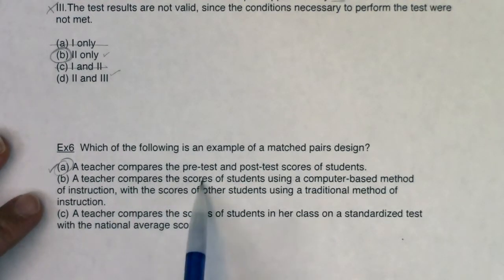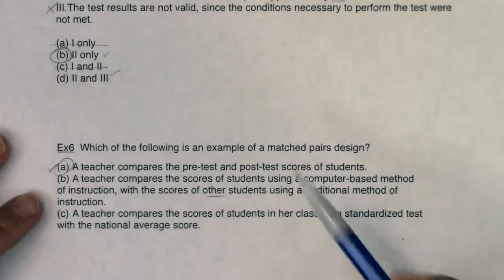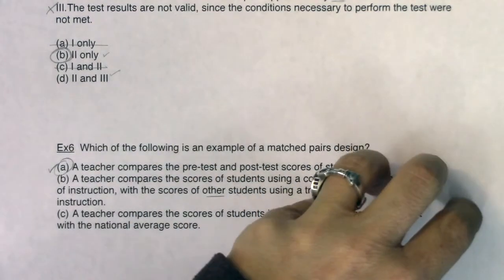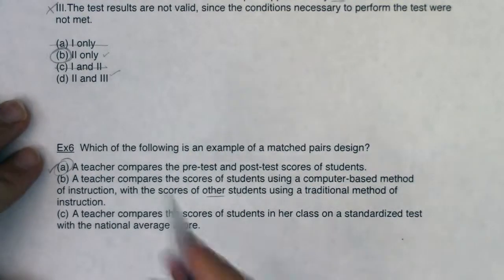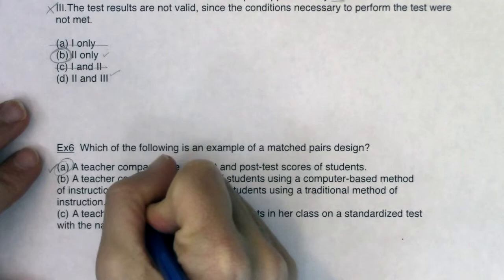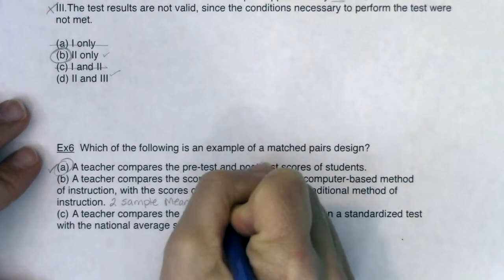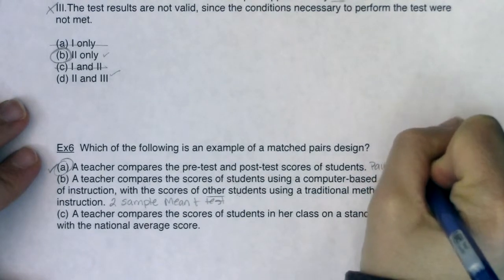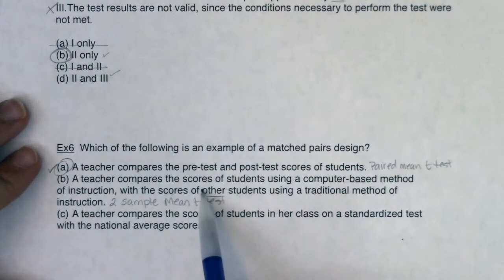Let's look at the other two just to talk about why they are not matched pairs. So a teacher compares the scores of students using a computer-based method of instruction with the scores of other students using a traditional method of instruction. So you can hear that these are two different groups of students. One's using your computer-based method. One's using the traditional method. So since those are two different groups of students they're not going to affect how each other are doing. So this would if we were going to run a hypothesis test this would be the independent version. So this would be the two sample mean t-test right where this was the paired mean t-test.